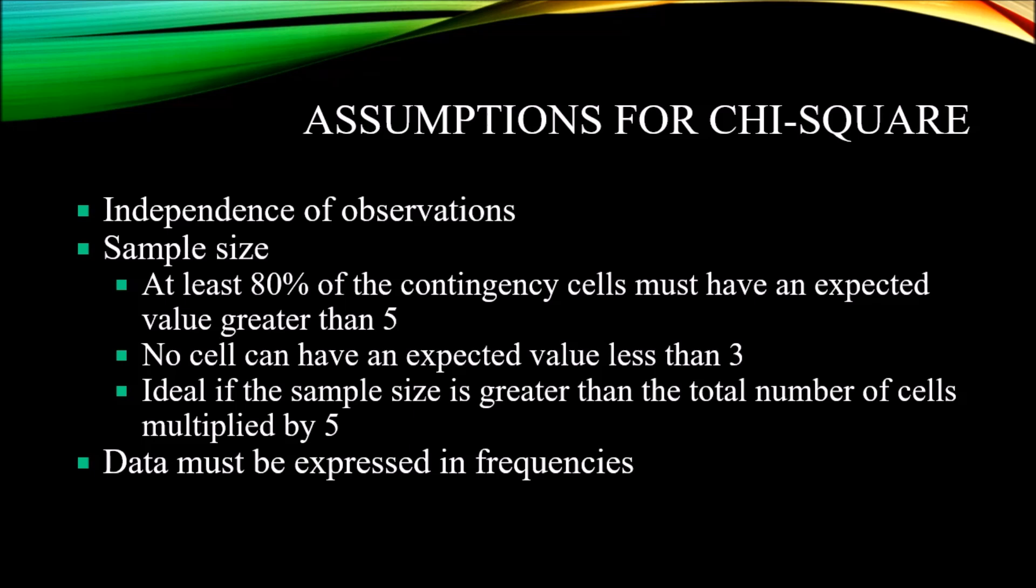Now let's take a look at the assumptions for a chi-square test. Just like parametric statistics, non-parametric statistics have assumptions. Our data need to meet certain assumptions so that we can have some confidence in the result. The first assumption for chi-square is the assumption of independence of observations. All the observations for a chi-square must be independent. Therefore, the chi-square test is not ideal for a pre-test, post-test design. By nature, the post-test will be dependent on the pre-test, and that would not be consistent with independent observations.